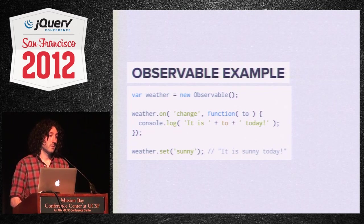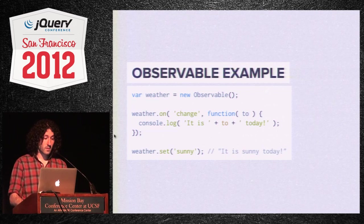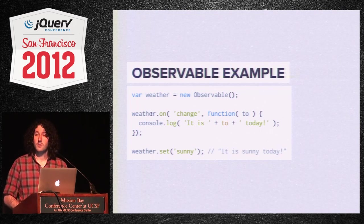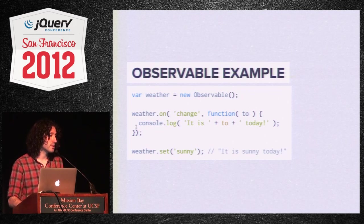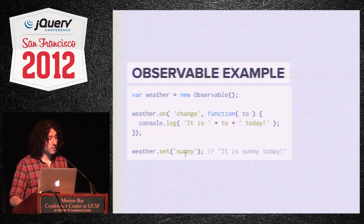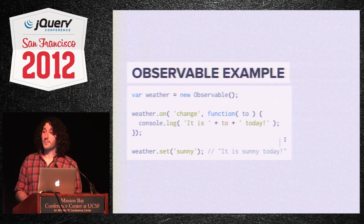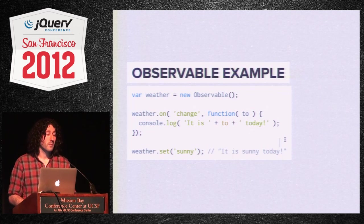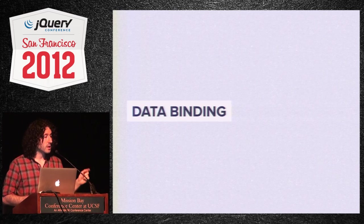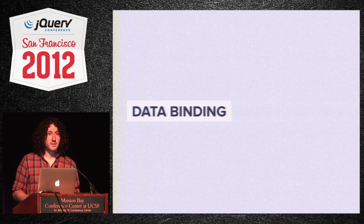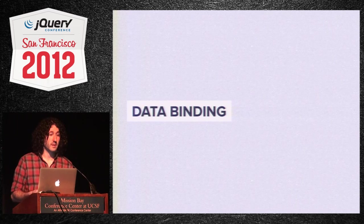Here's an example: create a new observable for weather. Whenever the weather changes, just log 'It is [weather] today.' Set the weather to sunny, and immediately you see the console log 'It is sunny today.' Fairly simple but powerful. Observables can also be used for data binding — we can add a couple more methods to this class to link observables together.